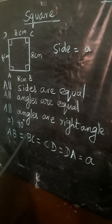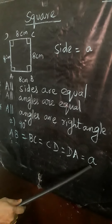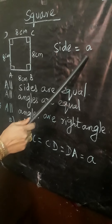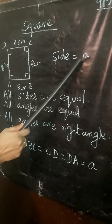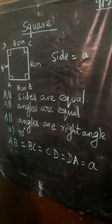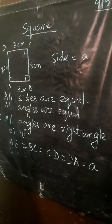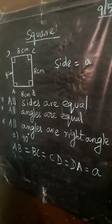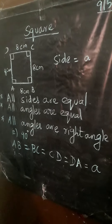So AB equals BC equals CD equals DA. We denote the side with the letter small 'a', so side equals a. In a square, all sides are equal. In a rectangle, opposite sides are equal. In a square, all sides are equal.